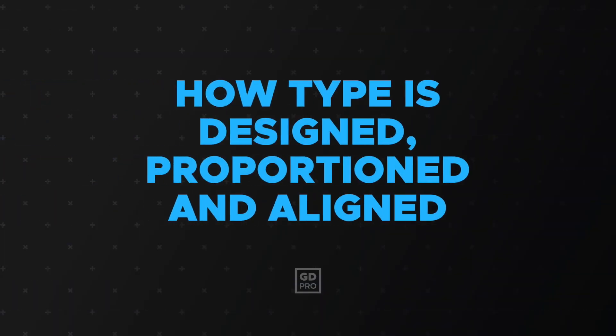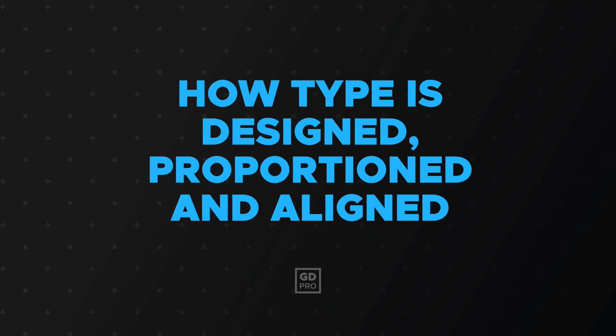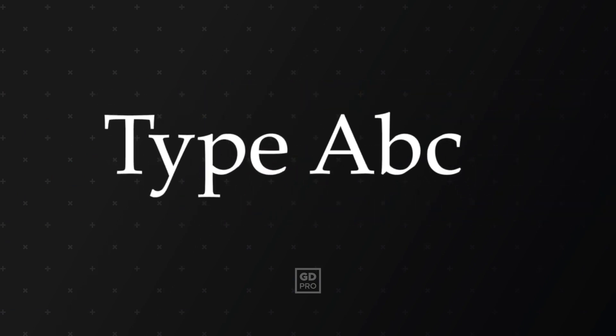Let's take a look at some basic terms surrounding how type is designed, proportioned and aligned. Take this text for example — there are several invisible guidelines being adhered to. First of all, the baseline is the line at which all of the letters sit on. Lowercase letters like the Y and P in this case drop below the baseline. These sections of those letters are what's known as descenders, and normally they drop to a consistent descender line.